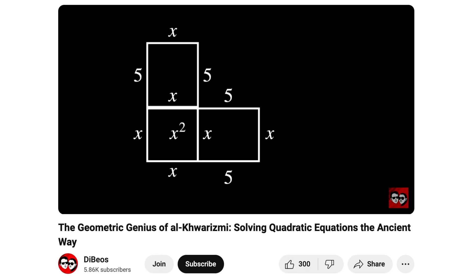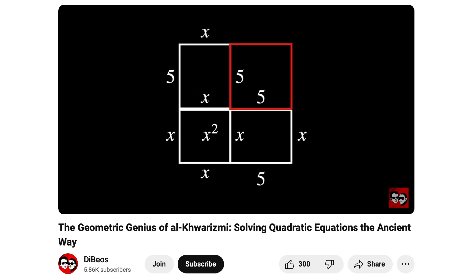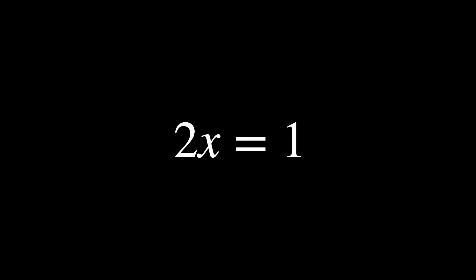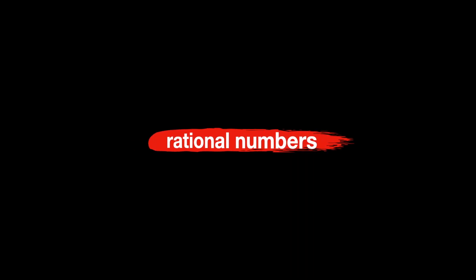We won't delve into all of it here, but we have another video discussing it in detail. Link in the description. Al-Khwarizmi's methods dealt effectively with linear and quadratic equations. But even these could lead to results that fell outside of the realm of whole numbers and made the use of fractions necessary. For example, solving the equation 2X equals 1 within the integers is impossible. So, rational numbers were introduced.